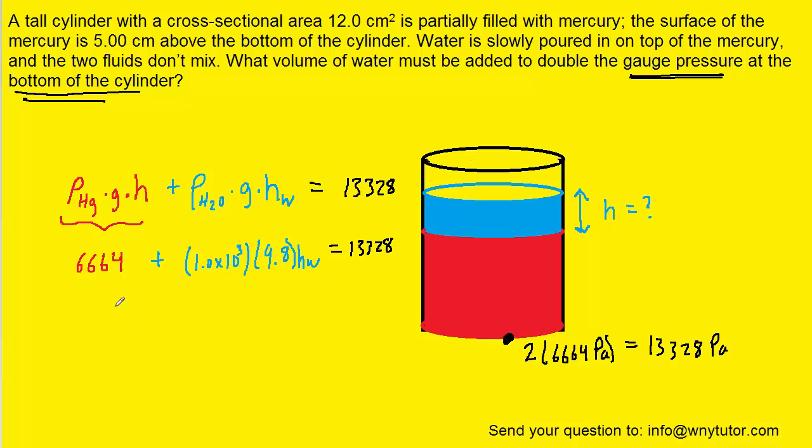We subtract 6,664 from the right hand side, multiply out 1 × 10³ and 9.8, then divide both sides by 9.8 × 10³. The height of the water is 0.68 meters, or 68 centimeters.